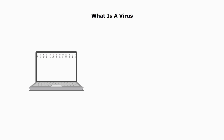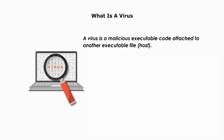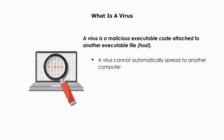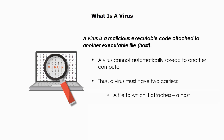What is a virus? A virus is malicious executable code attached to another executable file, called a host. A virus cannot automatically spread to another computer. It relies on a user's action to spread. Thus, a virus must have two carriers: a file to which it attaches, a host, and a user to transport it to other computers.